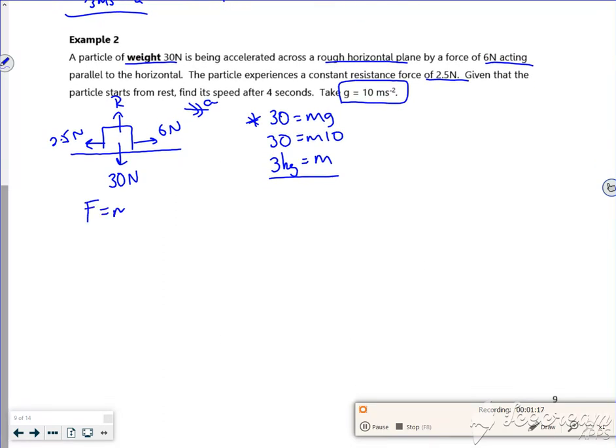Right, so let's do F equals ma. Let's do it horizontally. Force in the direction of travel minus forces opposing it is mass times acceleration. So 6 minus 2.5 is equal to 3a. So that's 3.5 over 3.